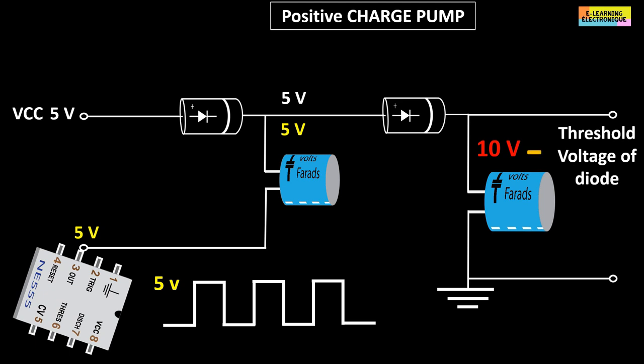To limit the voltage drop at the passage of the diodes, we use diodes with feeble threshold voltages as is the case with Schottky diodes.